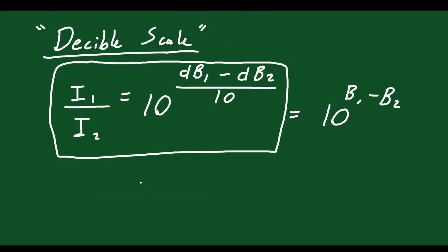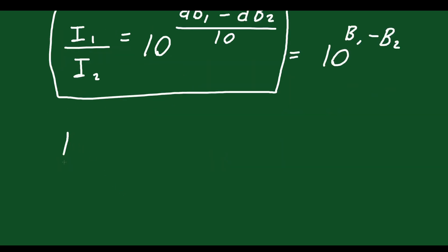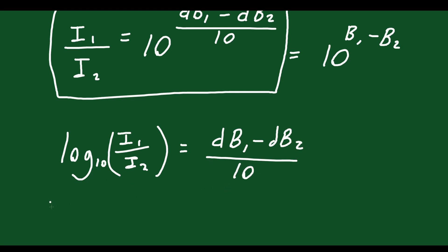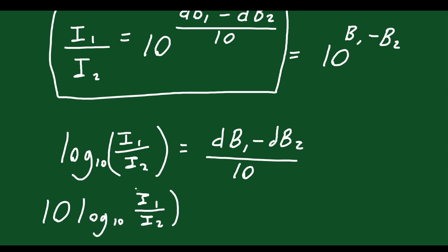This formula is currently written as an exponential, but you could rewrite it as a logarithm. You could say that log base 10 of I1 over I2 equals decibels 1 minus decibels 2, divided by 10. Multiplying both sides by 10 gives: 10 times log base 10 of the intensity ratio equals db1 minus db2.